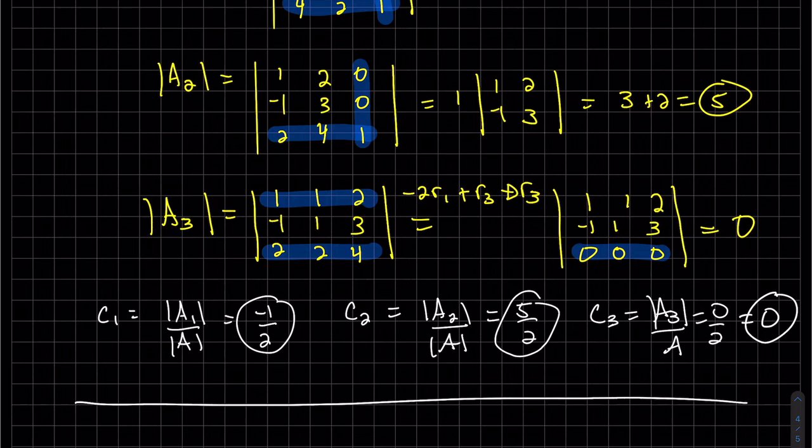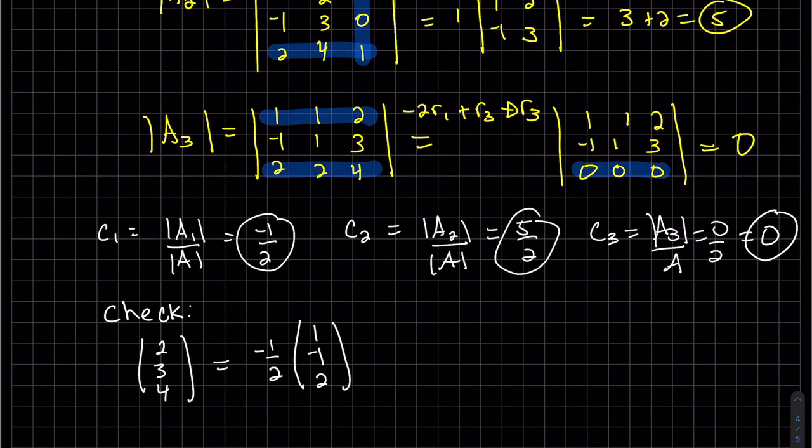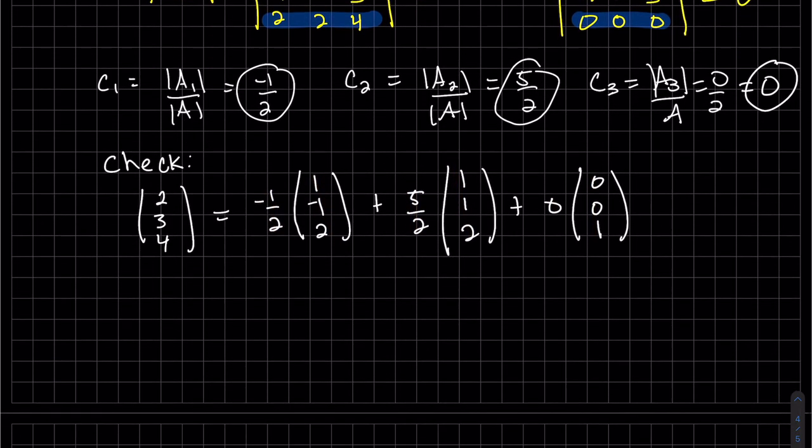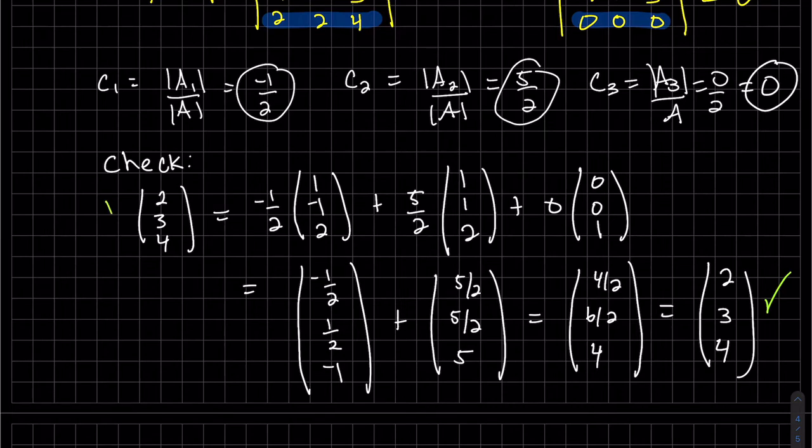And I'd like for us to check this. So this is our C1, C2, C3. This is our basis. Let's multiply it out, and we should get that vector back. And we do get it back.